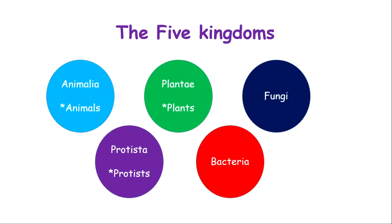Now the five kingdoms that you should remember are: Animalia, which we belong to and is inclusive of all animals; Plantae, which includes all plants; Fungi; Bacteria; and Protista, which includes protists. Those are the five kingdoms, and all organisms will be placed in one of those groups based on their features — whether it be an insect, a cat, a dog, or a lizard.